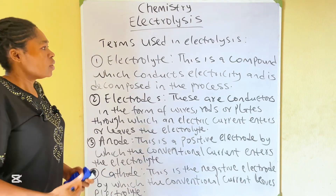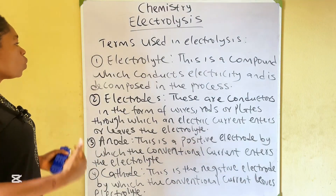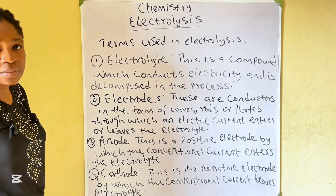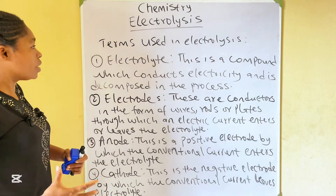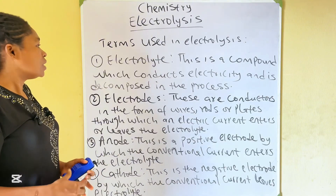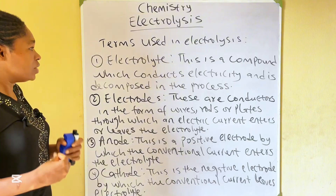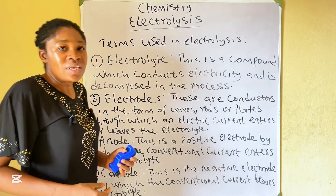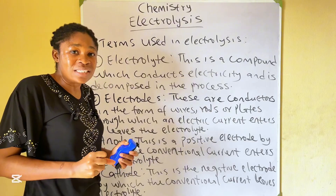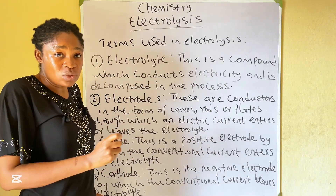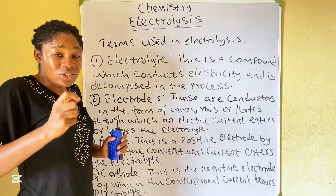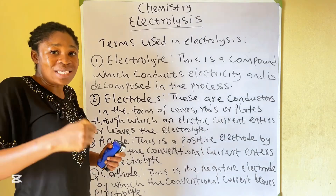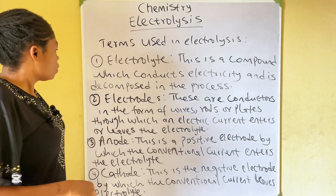Electrolyte — what's an electrolyte? This is a compound which conducts electricity and is decomposed in the process. For a substance to be called an electrolyte, it must be able to conduct electricity and be decomposed in the process. That compound must be either in a molten form when heat is applied, or when water is the solvent that dissolves it — that's when it's in aqueous solution.